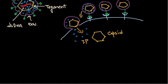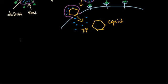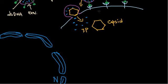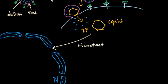Once released into the cytoplasm, the capsid migrates from the cytoplasm towards the nucleus — a very important stage. The capsid migrates through the microtubule system and reaches the nucleus through the nuclear pore, where it delivers its double-stranded DNA cargo into the nucleus.